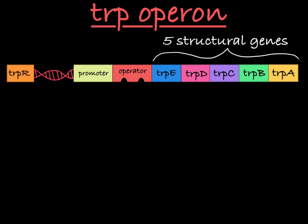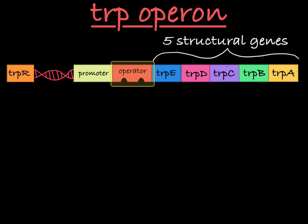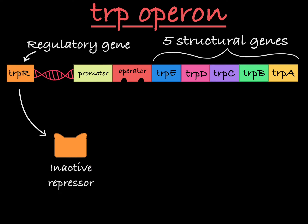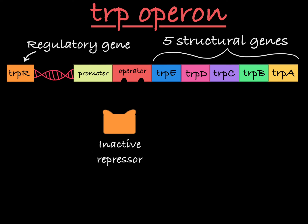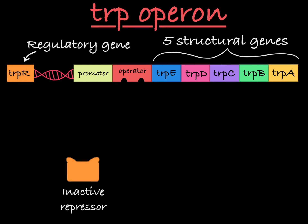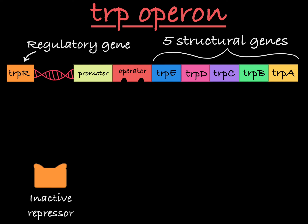These five structural genes share a promoter and an operator. Further upstream of the operon, you will find the regulatory gene TrpR. This regulatory gene encodes an inactive repressor. When this repressor is in its inactive form, it cannot bind to the operator and therefore cannot limit transcription of the structural genes in the trp operon.